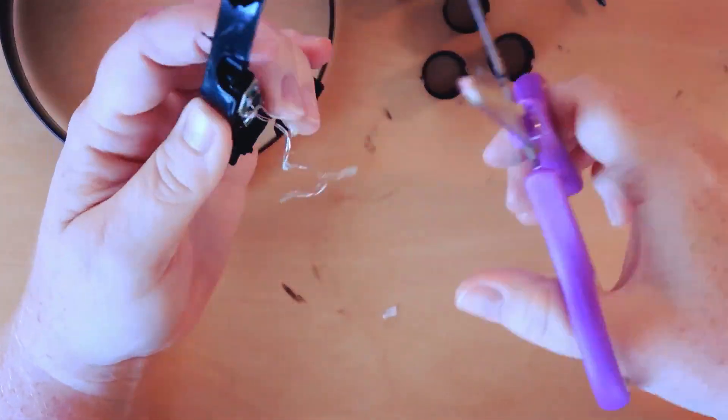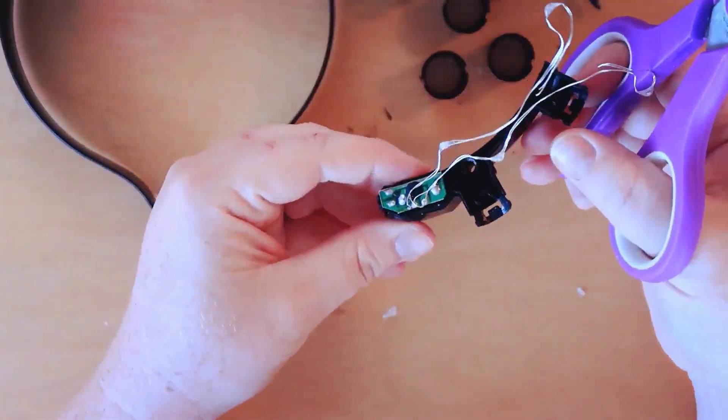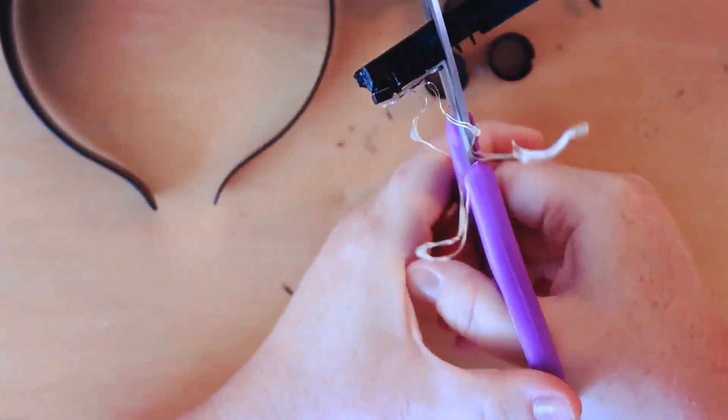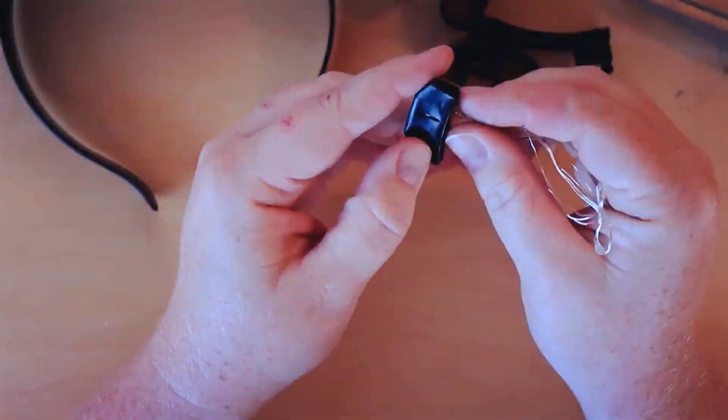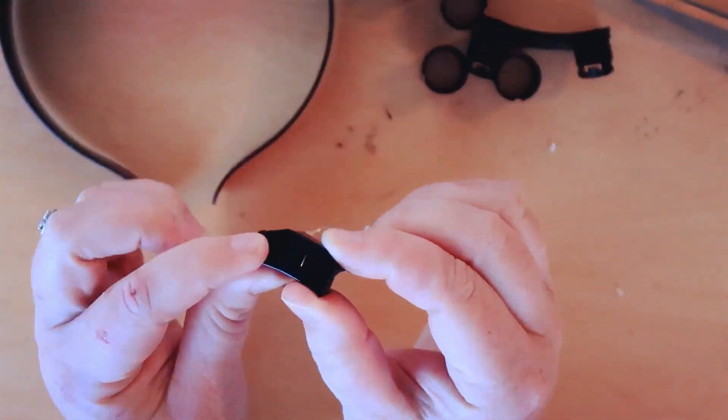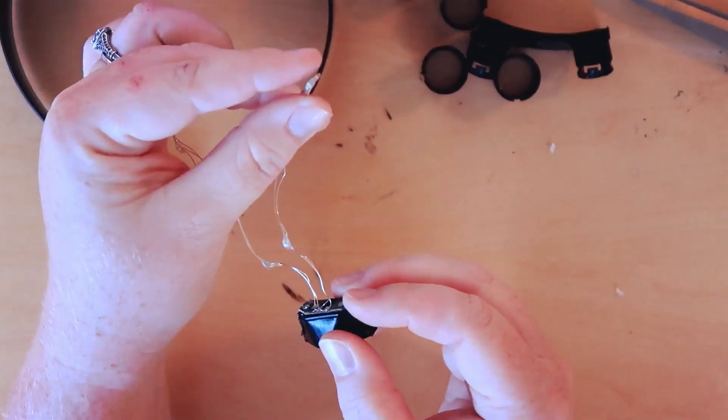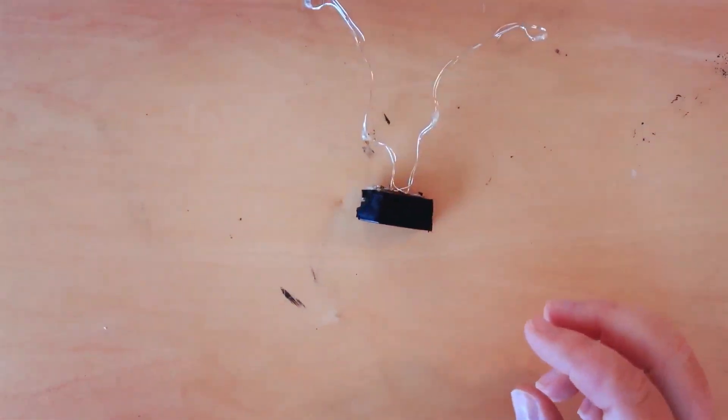We want to keep the on and off switch so what we're doing is just cutting the plastic around that on and off switch. You can see here I'm just using some scissors however if you have like a little saw you can use that as well.